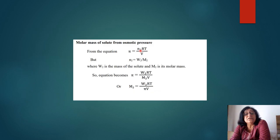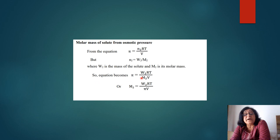The formula for osmotic pressure can be used to calculate molar mass: π = n2RT/V. Since n2 = W2/M2 (weight of solute upon molecular mass), the equation becomes π = (W2/M2)·RT/V, and rearranging gives M2 = W2RT/(π·V).